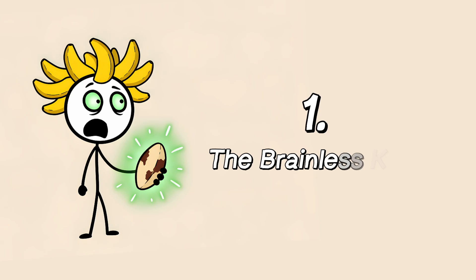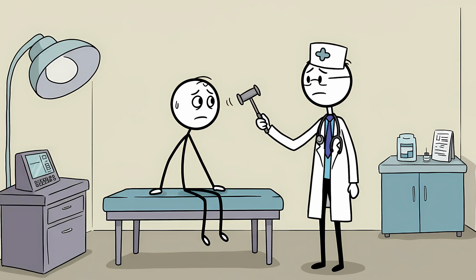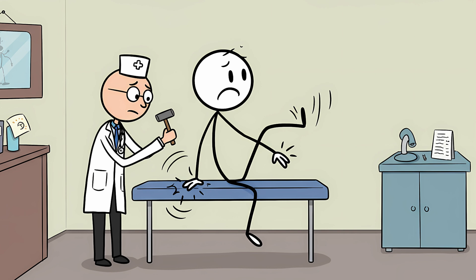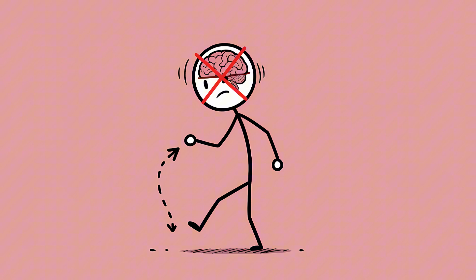Number one, the brainless kick. You're sitting at the doctor's office, perched on the edge of that crinkly paper, legs dangling. The doctor pulls out that little rubber hammer, and you know what's coming. They give your knee a gentle tap right below the kneecap, and against your will, your lower leg kicks out with the enthusiasm of a rockette. You can try to stop it. You can clench every muscle in your body and concentrate on keeping your legs still, but it doesn't matter. That leg is going to kick. This is the patellar reflex, the classic knee jerk, and it's beautiful, because it proves you don't even need your brain for some things.